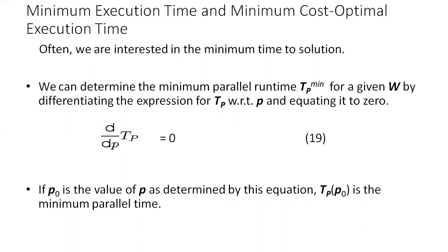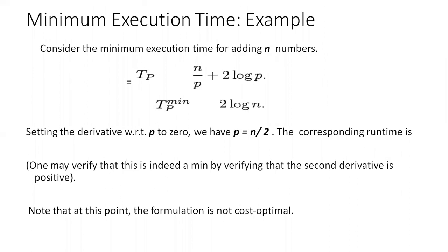In the following example, we derive the expression for tp_min for the problem of adding n numbers. If p0 is the value of p as determined by this equation, then tp(p0) is the minimum parallel time. Now consider the minimum execution time for adding n numbers. Under the assumption, the parallel runtime for the problem of adding n numbers on p processing elements can be approximately given by tp = n/p + 2 log p.